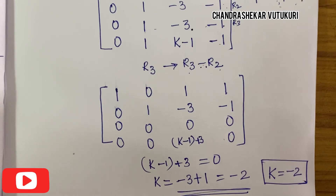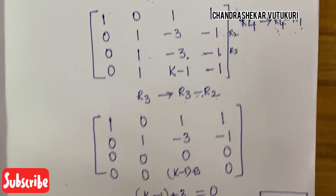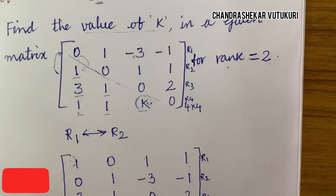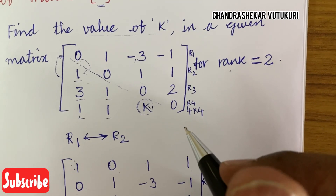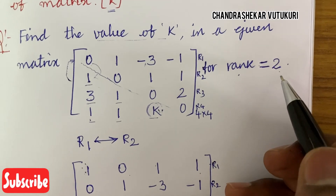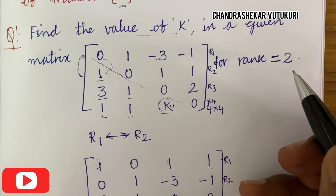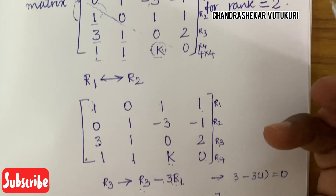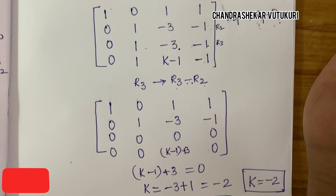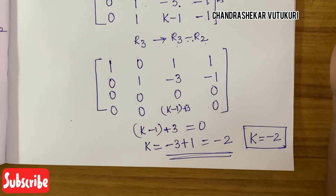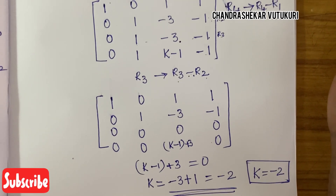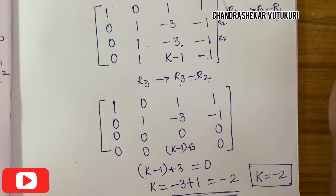This is how you work out the unknown value K in a given matrix when the rank is provided. For rank = 2, the value of K is found to be −2. For more videos, please subscribe to my channel, like the video, and if you are looking for any other topic, please comment. Good luck, dear students.